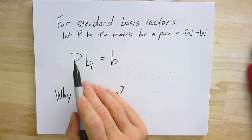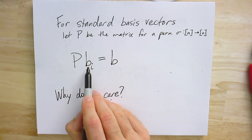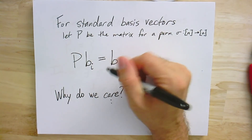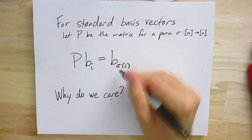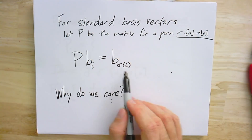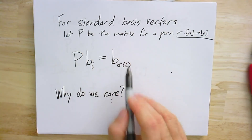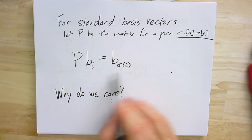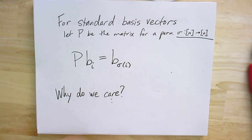If I apply matrix P to a standard basis vector b_i, what I would expect to happen is that it maps to the corresponding basis vector b_{σ(i)}, where σ is the name given to the permutation P is supposed to do. Because there's only one non-zero element at index i, that element gets placed in position σ(i). All the zeros stay zero — all we did was move that unique one element to a new index.